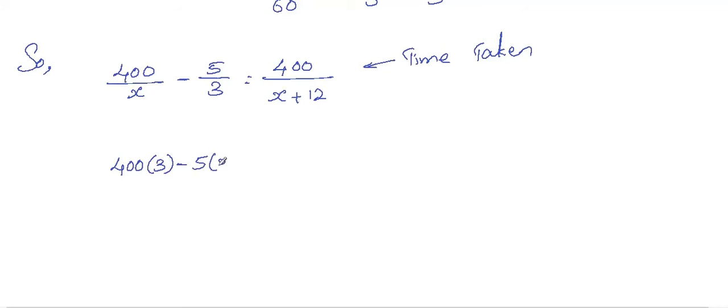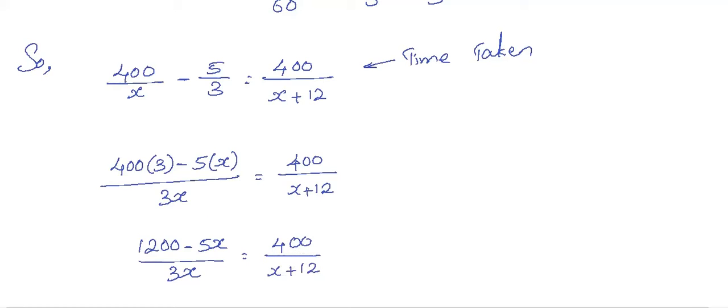Now simplify this. Take LCM and simplify. We'll get 400 times 3 minus 5X divided by 3X, so 1200 minus 5X divided by 3X equals 400 divided by X plus 12. If we cross multiply, we'll get this.